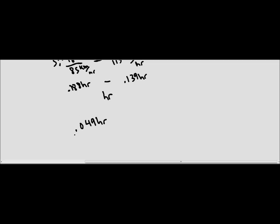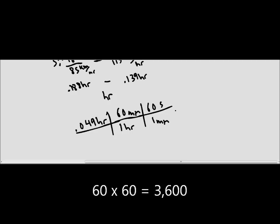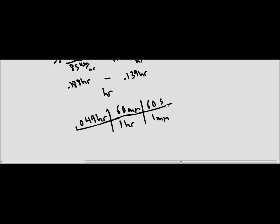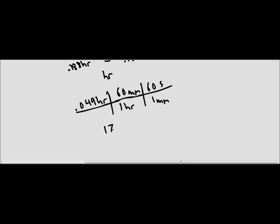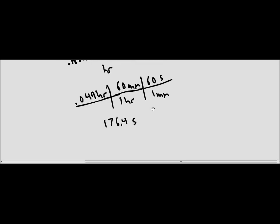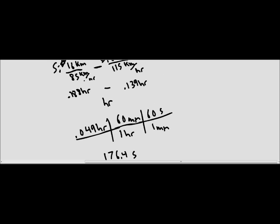So what you're going to have to do is convert it into seconds. Using dimensional analysis: for every one hour there are 60 minutes, and for every one minute there are 60 seconds. You don't actually have to write all this out — just remember that if you multiply whatever you have in hours by 3,600, you're going to get it in seconds. The answer from dimensional analysis using the rounded number is 176.4 seconds. However, if you don't round and save the numbers in your calculator, you end up with 176.78 seconds as your change in time for the final solution.